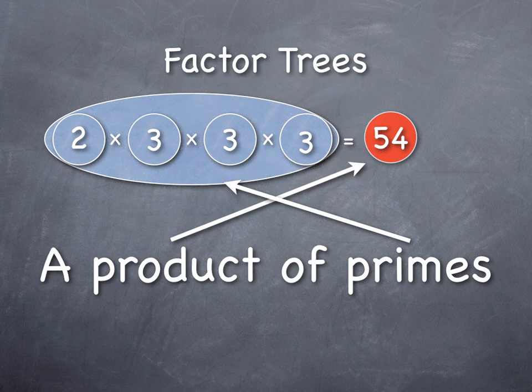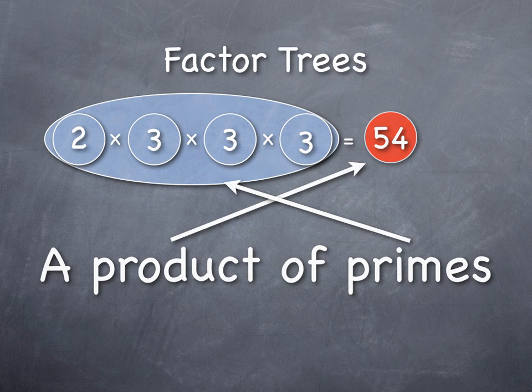So, 54 has a different set of building blocks than 24. This has 2 and then 3 3s. Each number that's not a prime number will have a unique set of product of primes, almost like its instructions for building it, its own code that's made up of prime numbers.